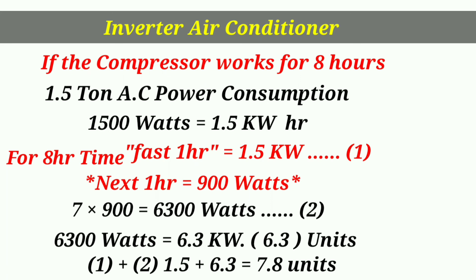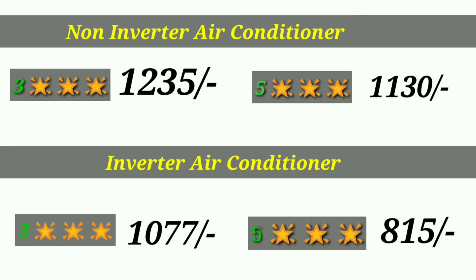Friends, for 3-star and 5-star ratings, the power consumption is different. For the non-inverter AC, the 3-star rating uses 1235 units and the 5-star rating also uses 1135 units. For the inverter AC, the 3-star and 5-star ratings show very different power consumption numbers.